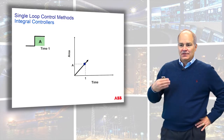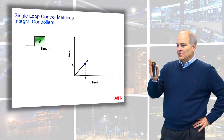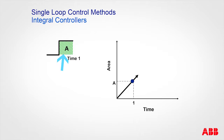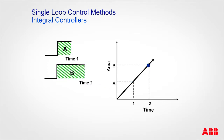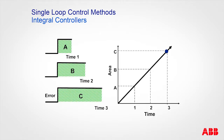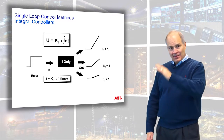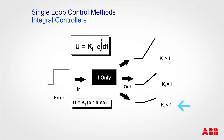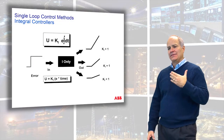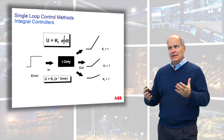Here the error is represented as set point minus measured value. Taking the area under the curve: at time one you have area A, at time two area B, and it continues growing as the error persists. The output is proportional to that area under the curve — that's what the integral symbol means. The gain is a multiplier: less than one reduces the slope, equal to one gives exactly the area, greater than one makes it very steep.